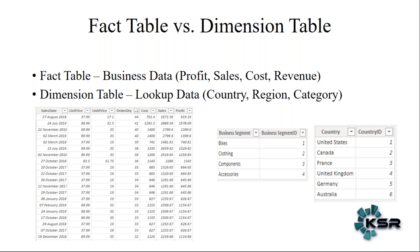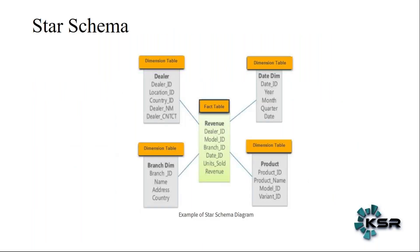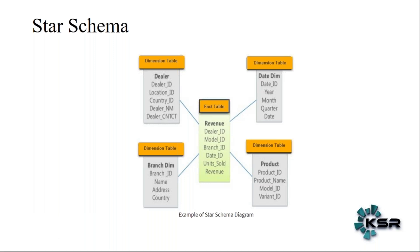Now you have clarity on fact table and dimension table. Let's see what star schema is — this is the most widely used schema. We have a fact table and we also have dimension tables, and the way star schema is defined is every dimension table will be connected to the fact table. Irrespective of how many dimension tables you have, if every dimension table is connected to a fact table, that schema is called star schema.